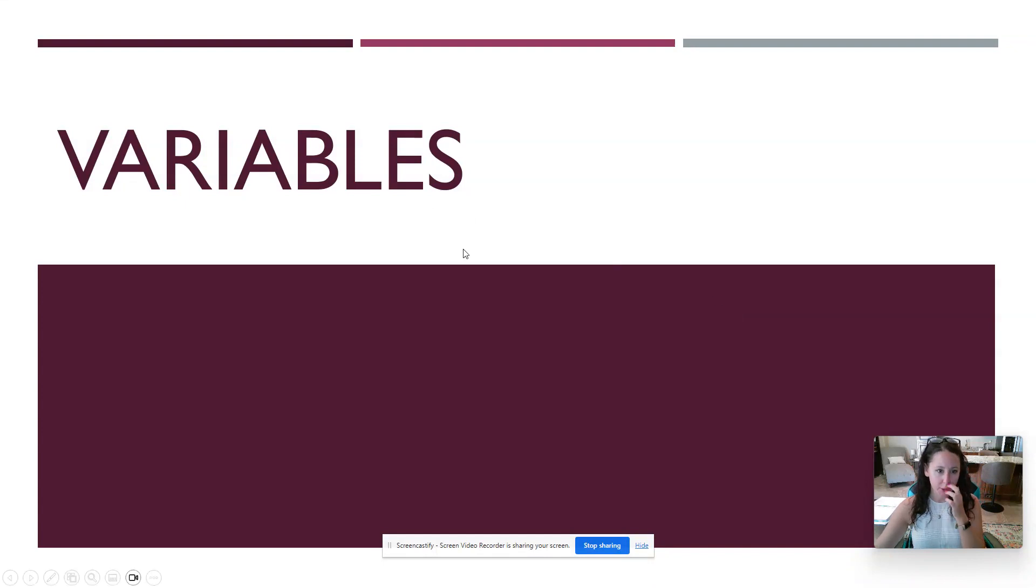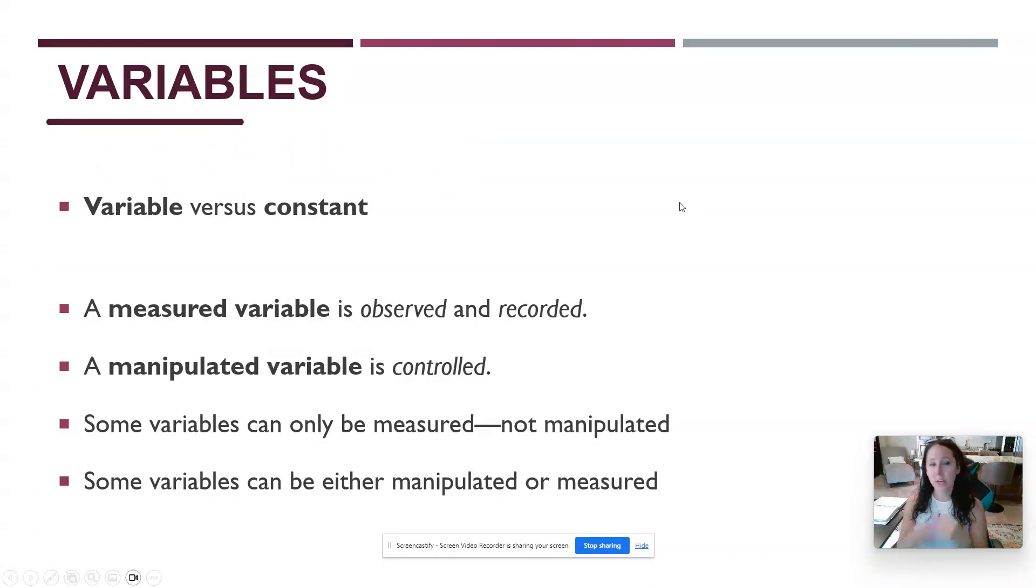So the first thing that we're going to talk about with variables is what is a variable versus what is a constant. A constant is a value in the study that is the same for everyone. If I'm interested in doing some sort of parenting study and I am only interested in parents that have two children in my study, the number of children would be a constant. The value is going to be the same for everybody. I'm not manipulating it and it's not changing for anybody. I'm not comparing families with two kids versus families with three kids. The number two for number of children is a constant.